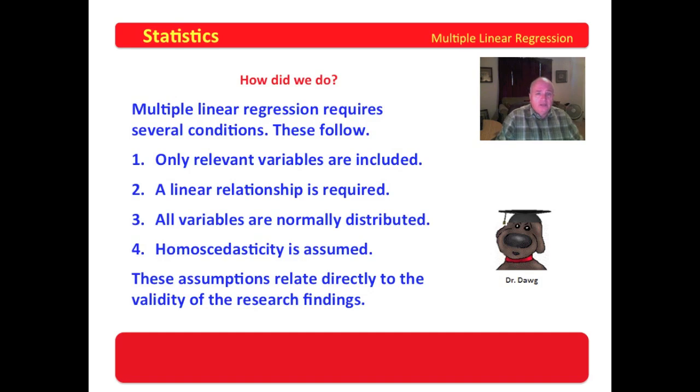Now, how did we do? We wanted to give you the assumptions for multiple linear regression. Only relevant variables are included. A linear relationship is required. All variables are normally distributed. Homoscedasticity is assumed. In other words, you have homogeneity of variance. And these assumptions relate directly to the validity of your research findings. Now, when you don't meet an assumption, I want to remind you that you would declare that. And then you go find a researcher that says your study is still robust, even if it doesn't meet that assumption. But what you're doing is you're declaring that you didn't meet it, and leaving the findings of your research in the hands of the informed reader.